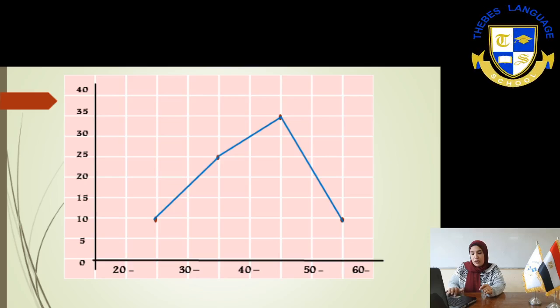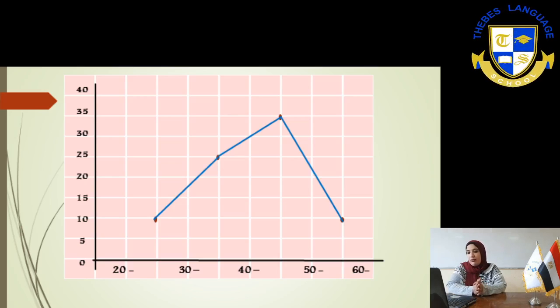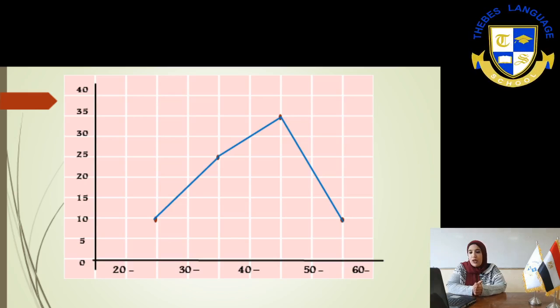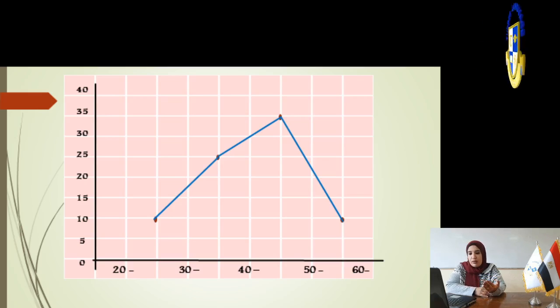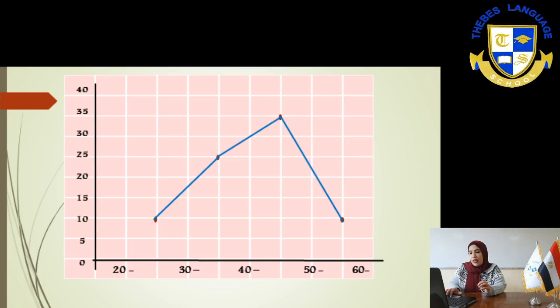After you get the center, how can we represent it? X-axis, and we write the number of set. Number 1, on 25 till we reach 10. In the middle of the set or the center of the two sets till we reach 10. And from 35 till we reach 25. From 45 till we reach 35. And from 55 till we reach 10.